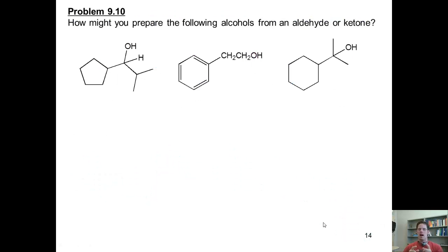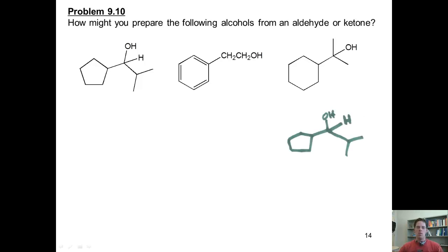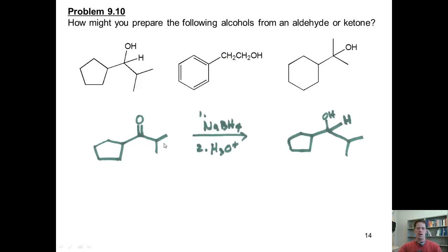Let's now do some problems. I want you to show how to prepare the following products by reacting an aldehyde or ketone with sodium borohydride. This may be a good place to pause the video and attempt these problems on your own first. Here is the answer to our first question: to make this product starting from an aldehyde or ketone treated with sodium borohydride, all we do is convert the oxygen-carbon bond into a double bond. That takes us back to this ketone starting material. If I take this ketone and treat it with sodium borohydride and an acid quench, it will make this alcohol product.